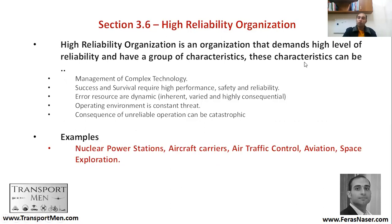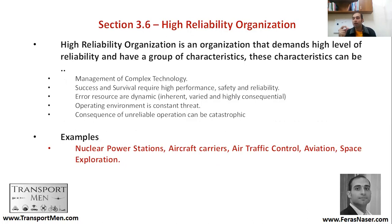Now that we have analyzed railway accidents, we need to talk about concepts in railway safety — specifically the concept of the High Reliability Organization. An HRO is an organization that must manage complex technology where any failure could lead to a catastrophic event. Examples of such organizations include nuclear power stations, aircraft carriers, air traffic control, aviation, and space exploration.